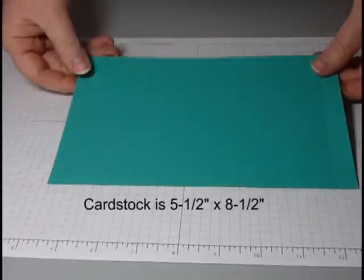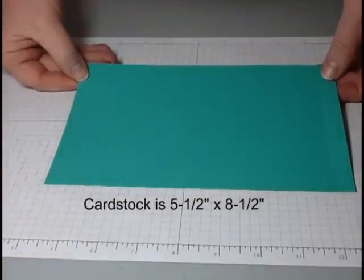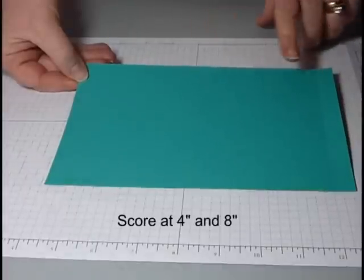First, you want to cut a piece of cardstock to 5 1⁄2 by 8 1⁄2 inches, same size that you would use to make a card, and we're going to score it at 4 inches and again at 8 inches.